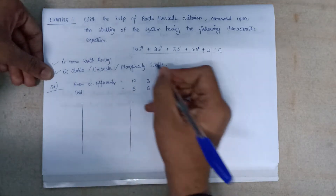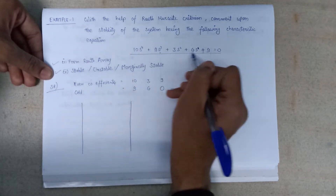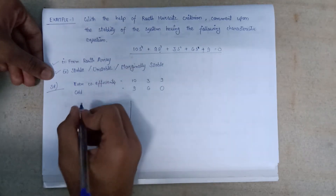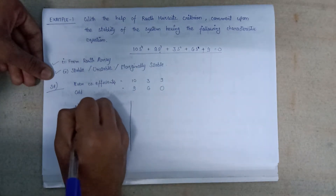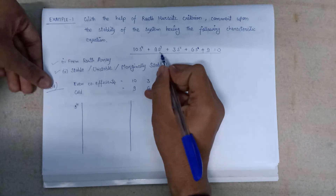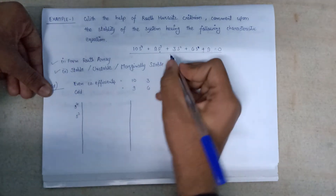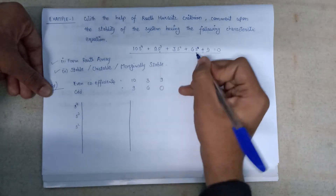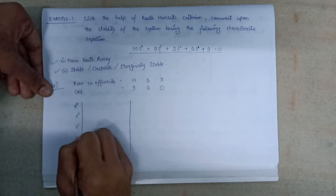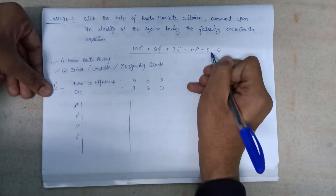Then we need to form the Routh Array. Inside it we will write all the powers of S in decreasing order: S⁴, S³, S², S¹, and S⁰.